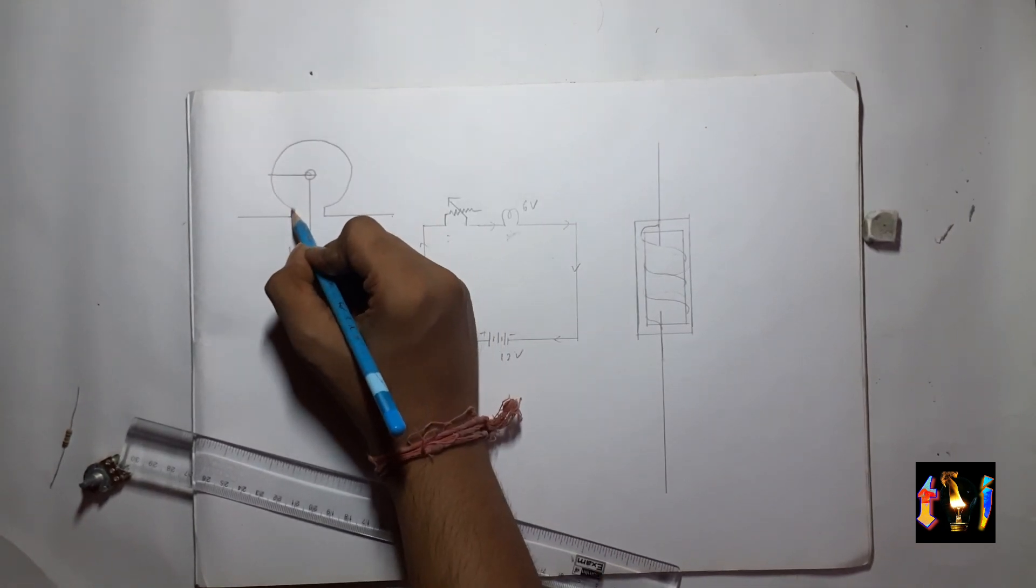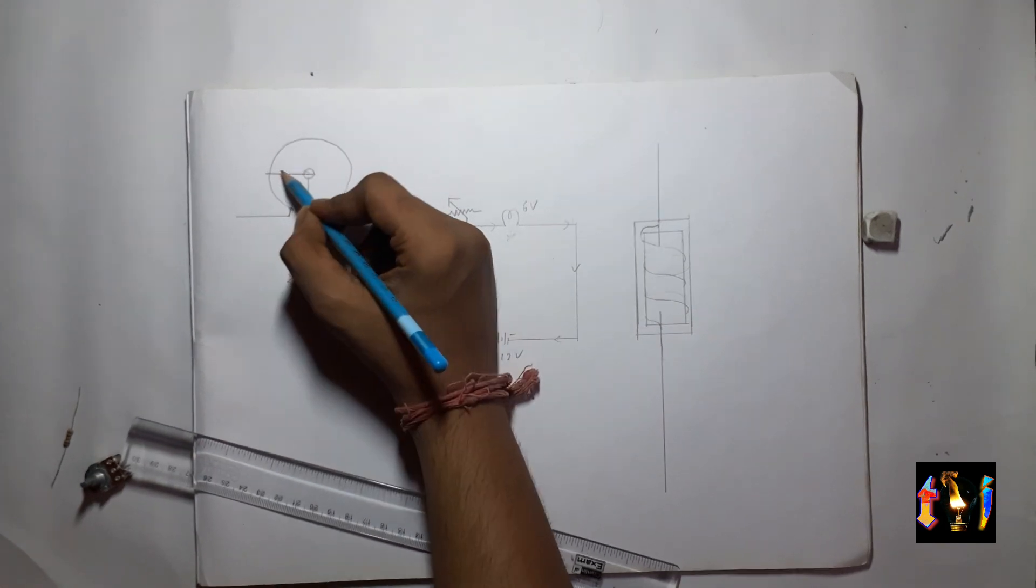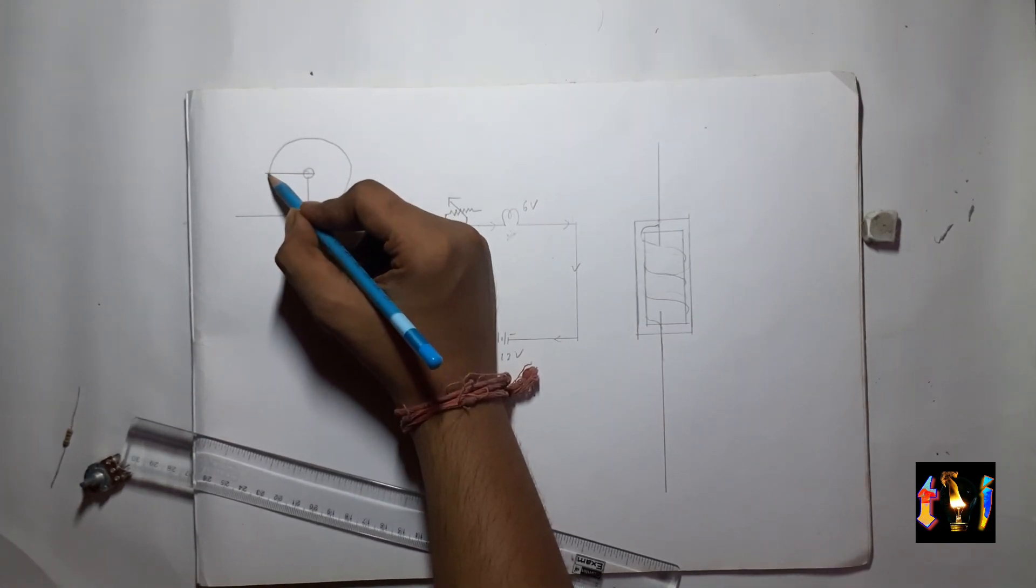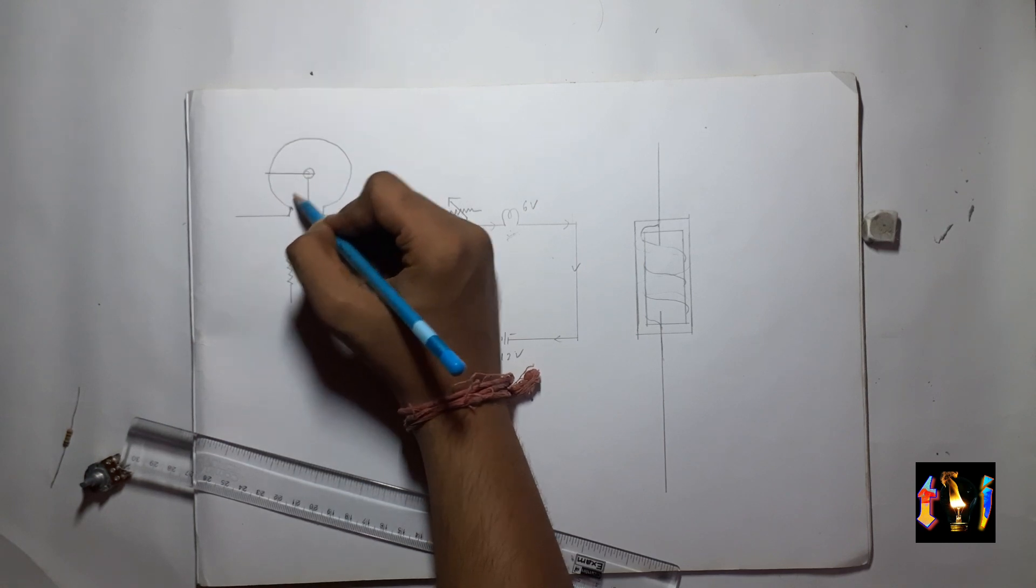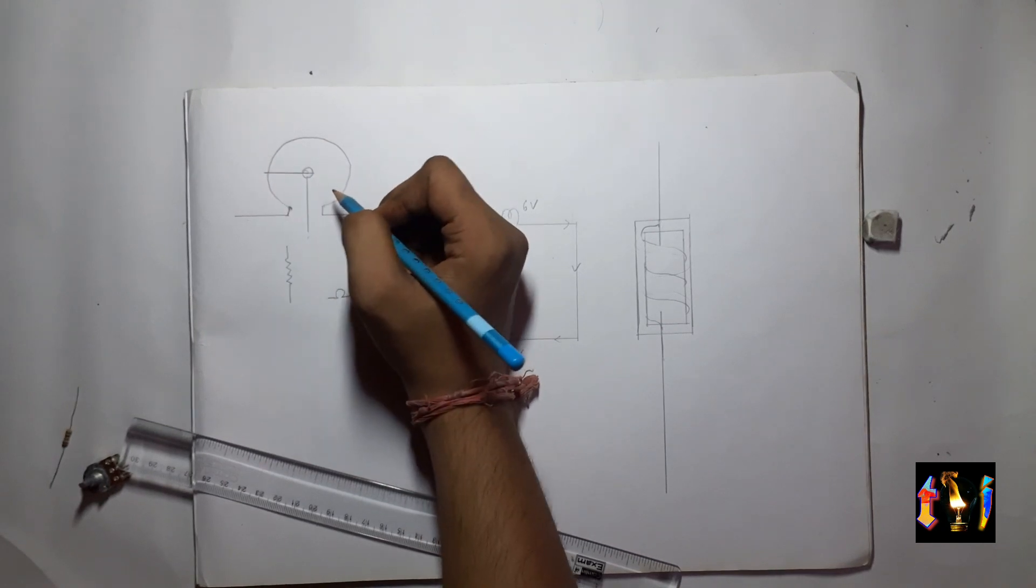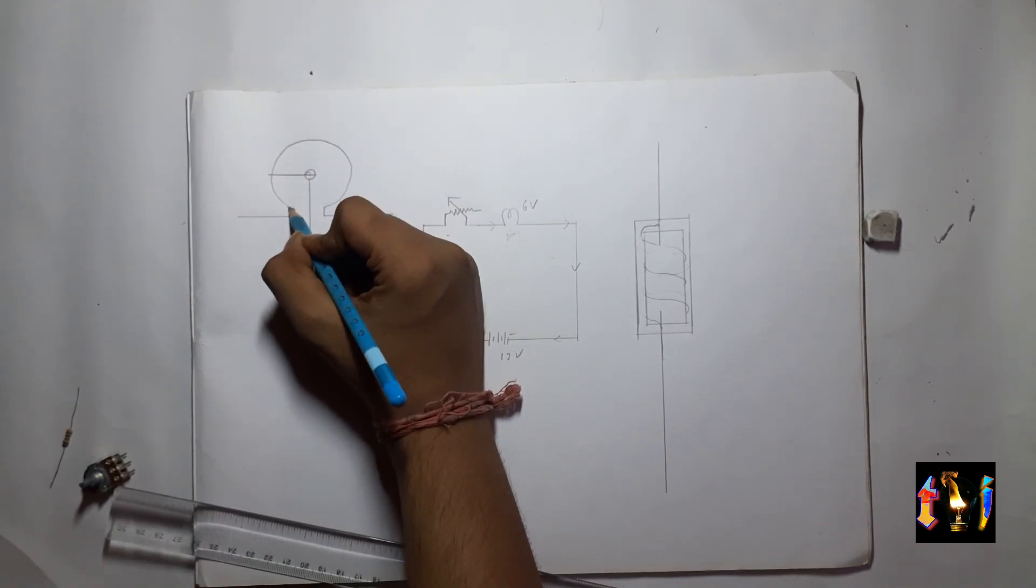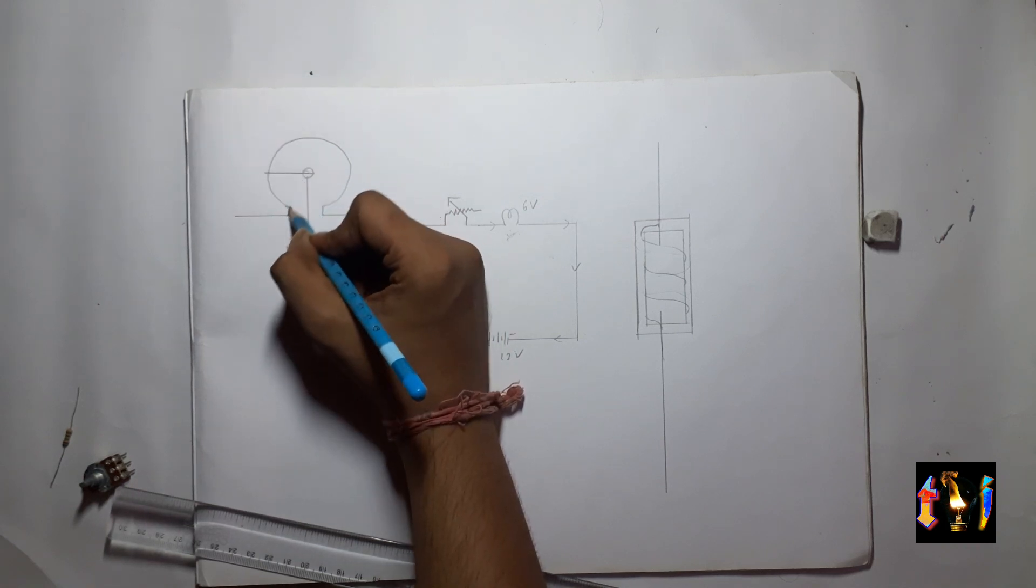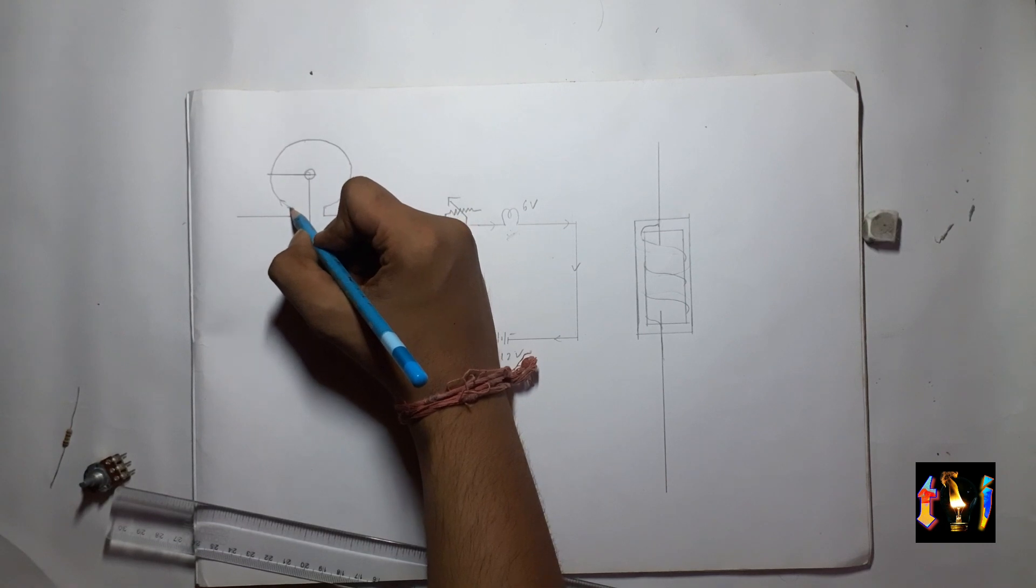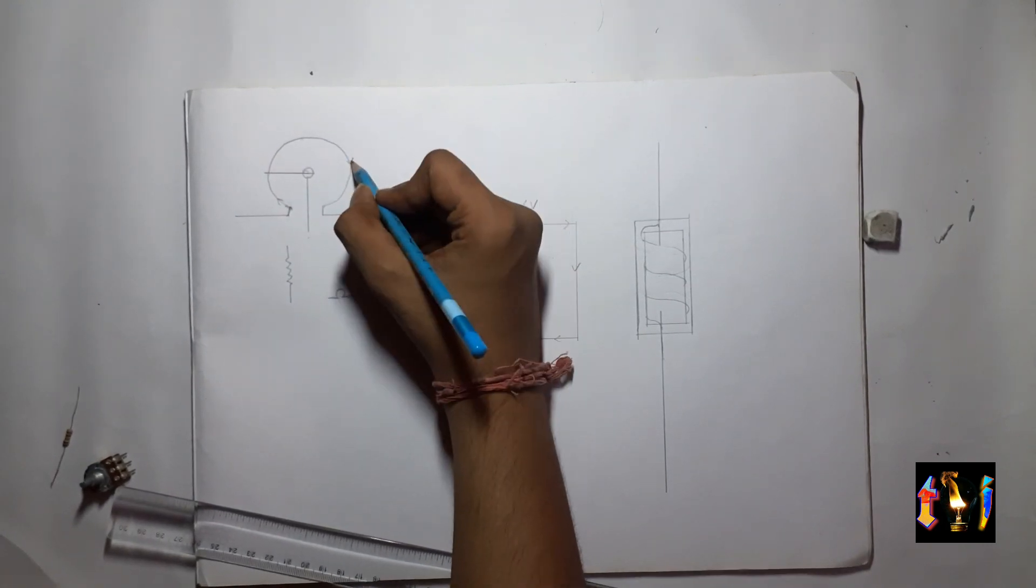So basically this terminal is connected to a resistive wire. The tip of this terminal touches the resistive wire and this terminal can be moved along this whole section of the wire. When the tip of this terminal is touching the wire at this point the resistance is very low and when the terminal moves from here to here the resistance increases.